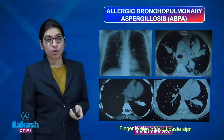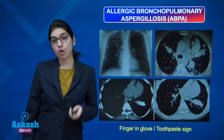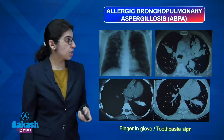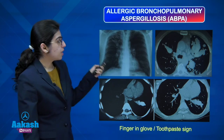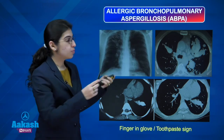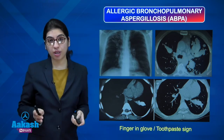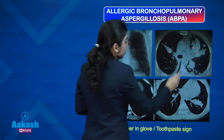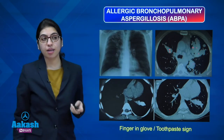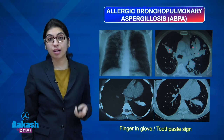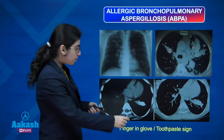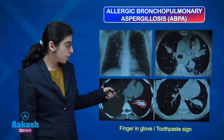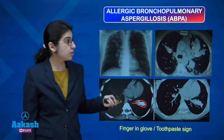In allergic bronchopulmonary aspergillosis, the patient is allergic with hypersensitivity. There will be multiple dilated bronchi with central bronchiectasis filled with mucus, giving a finger-in-glove appearance. The mucus is very hyperdense, giving a toothpaste-like appearance on imaging.